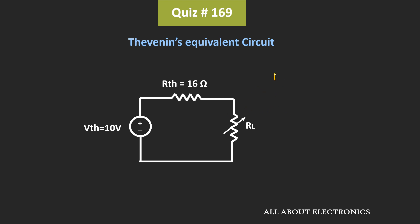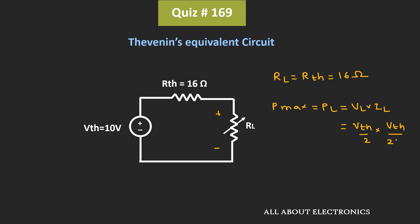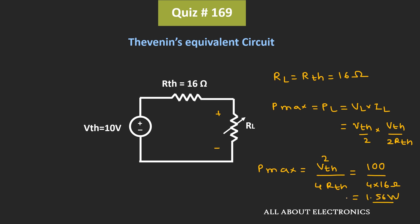For the maximum power transfer, the value of the load resistor RL should be equal to Rth, that is 16Ω. The value of the maximum power Pmax, which is the power across the load, equals VL times IL. When these two resistors are the same, the voltage across the load equals Vth divided by 2, and the load current IL equals Vth divided by 2 times Rth. That means maximum power equals Vth² divided by 4 times Rth, which is 100 divided by 64, and Pmax comes out to 1.56W.